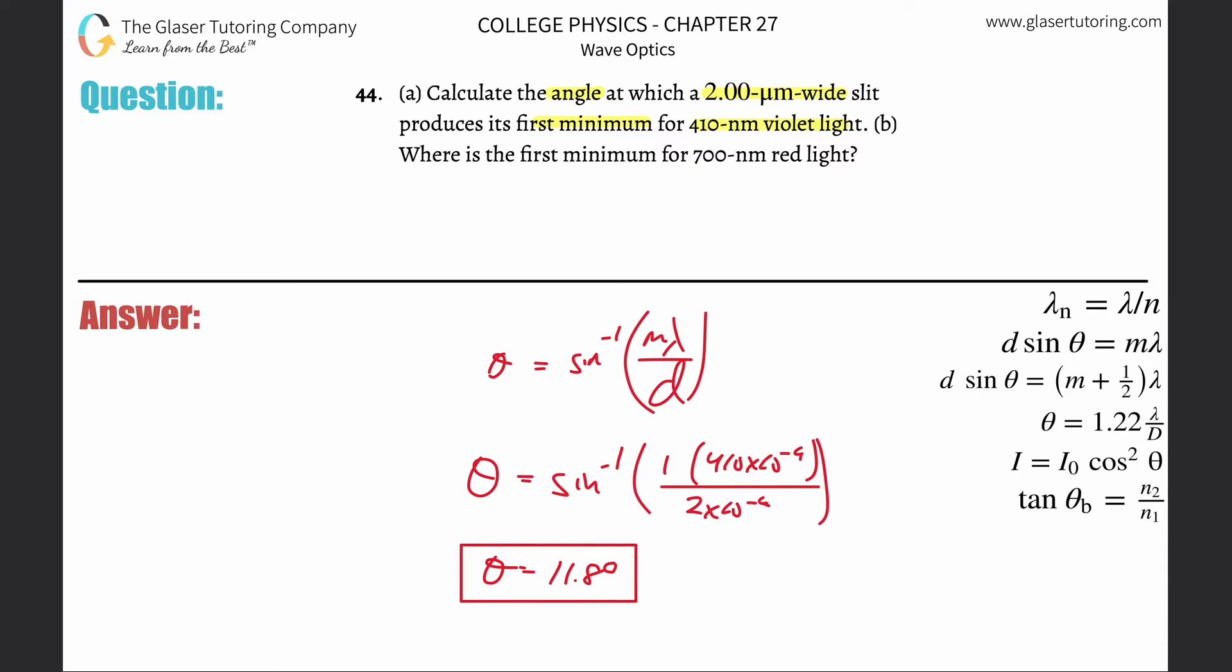So now it's saying where is the first minimum for 700? What do you mean by where? What does that mean? You want an angle? You want a distance? Probably can't really calculate the distance because I don't know how far this screen is from the opening. So I'm going to have to assume that they're talking about the angle.